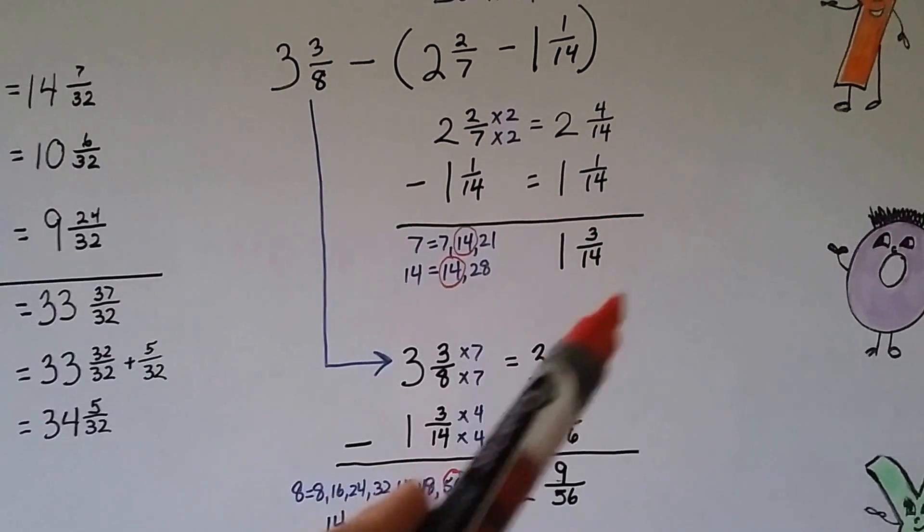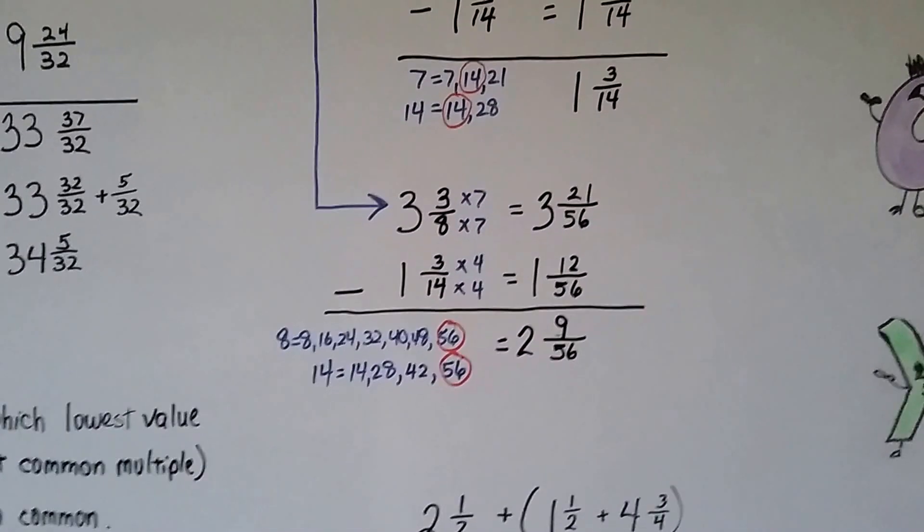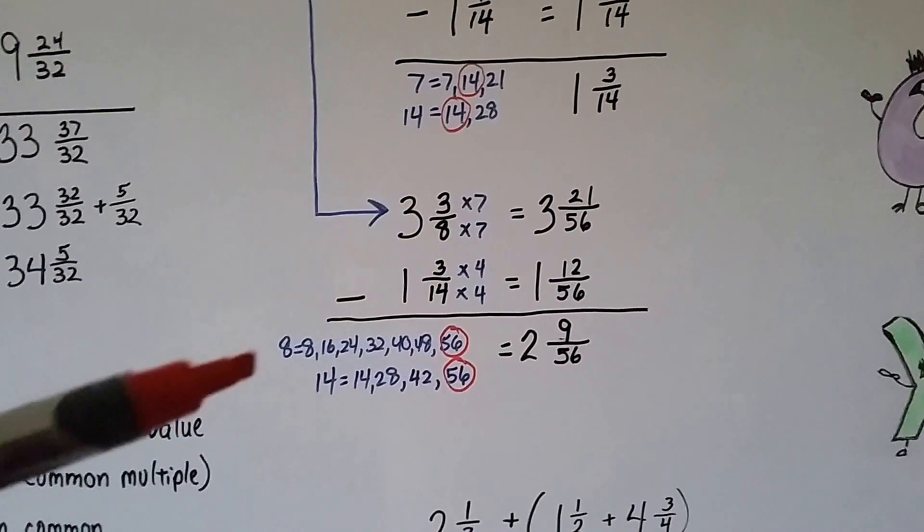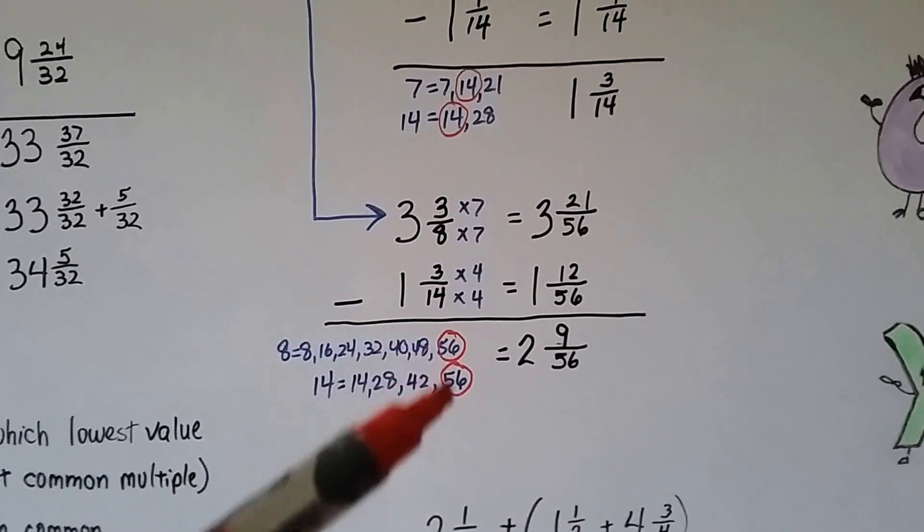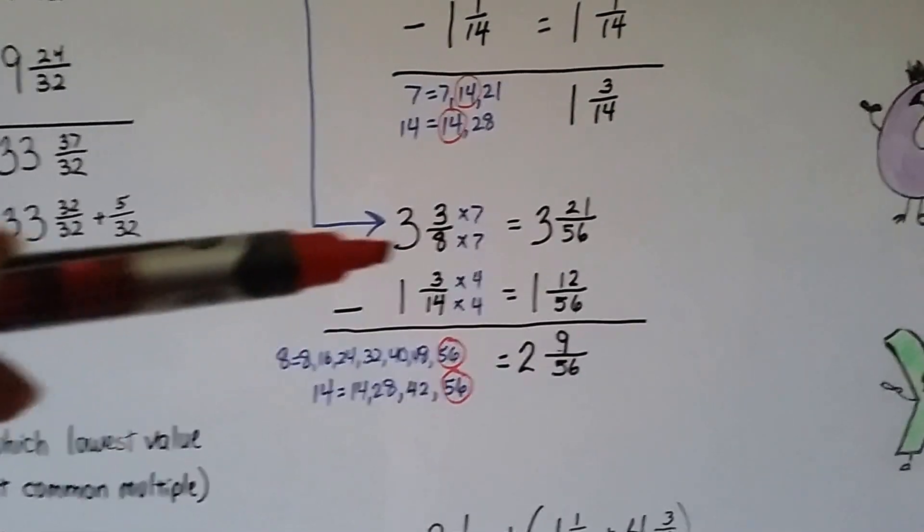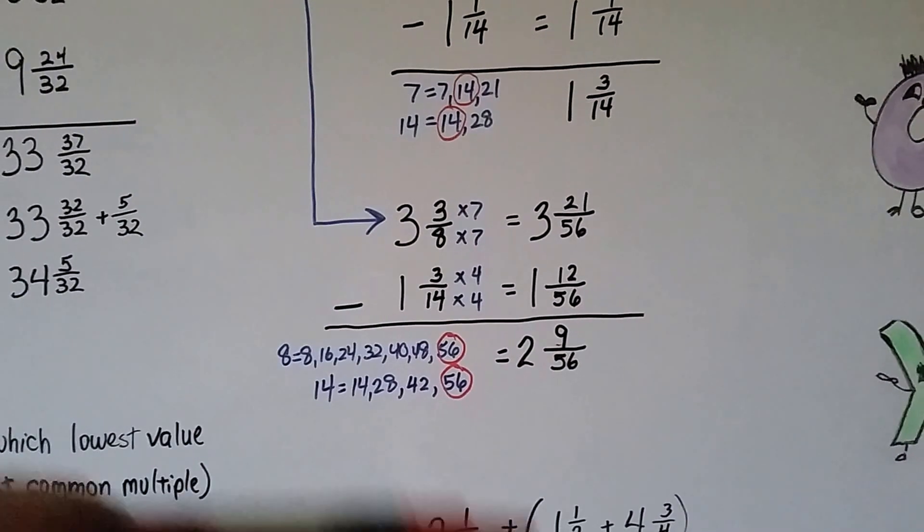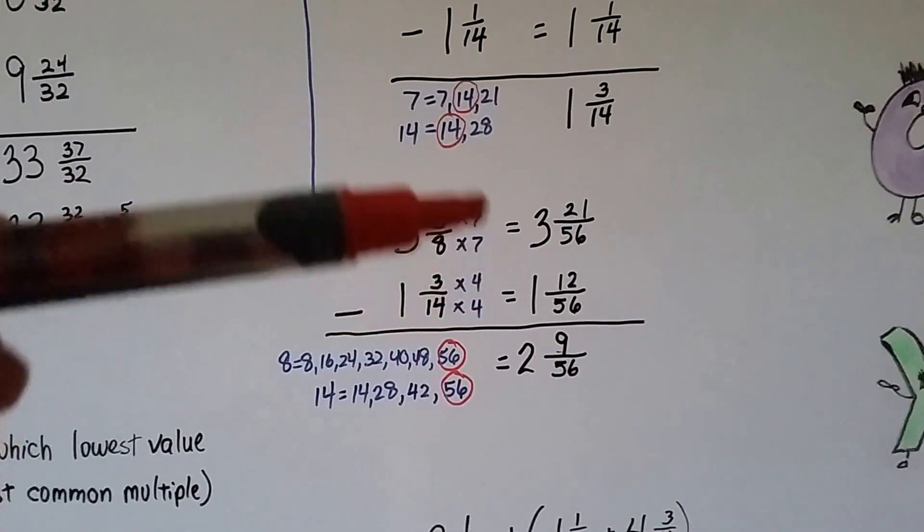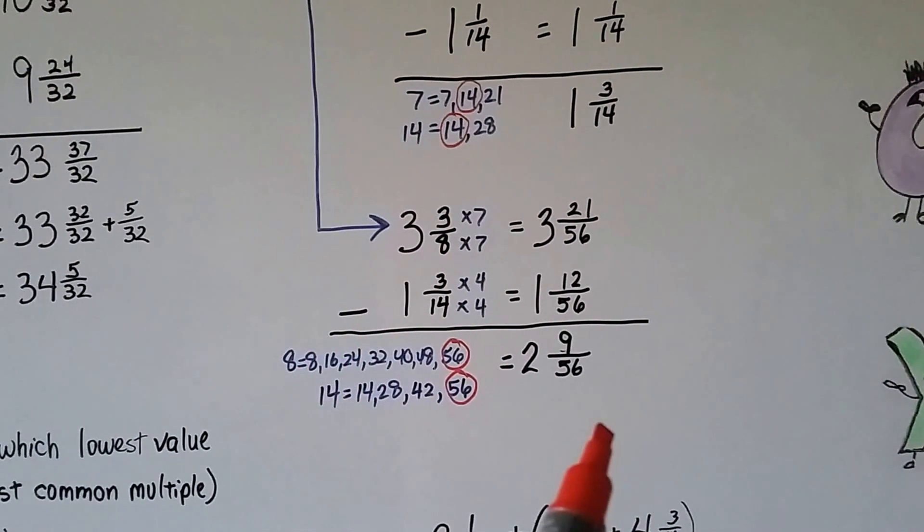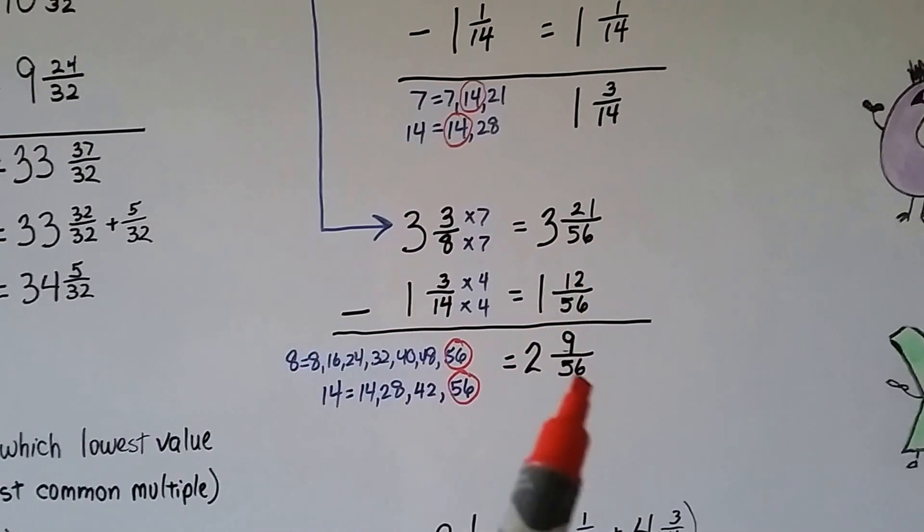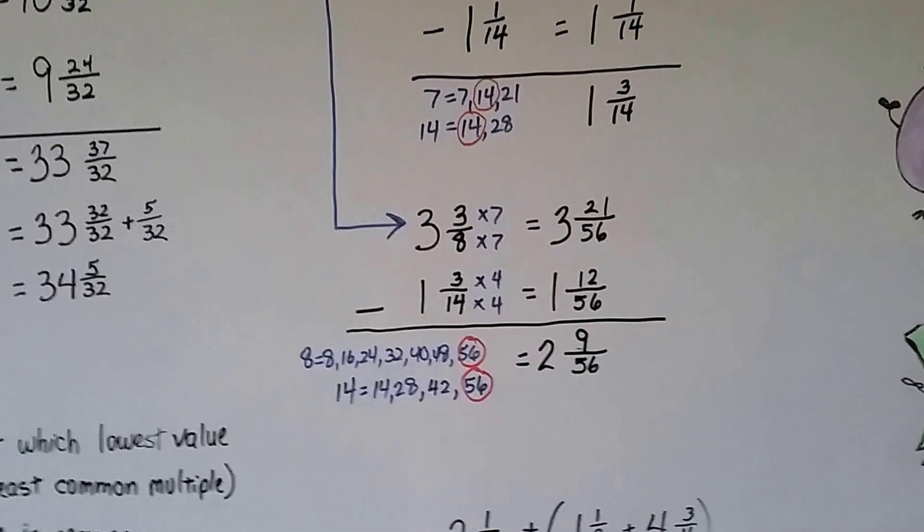Now we take this amount and we subtract it from this one. But we need to figure out where the 8 and the 14 can meet. So we list all their multiples. And they can meet at 56. We multiply the 8 times 7 to get a 56 and the 14 times 4 to get a 56. We multiply their numerators by the same amount that we multiplied the denominator. And we subtract. 21 take away 12 is a 9. So we have 9 56ths. And 3 take away 1 is 2.